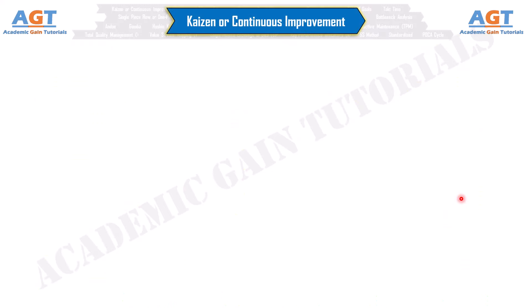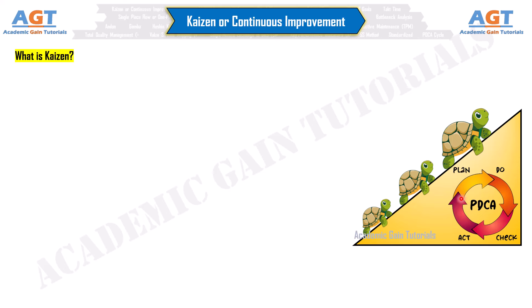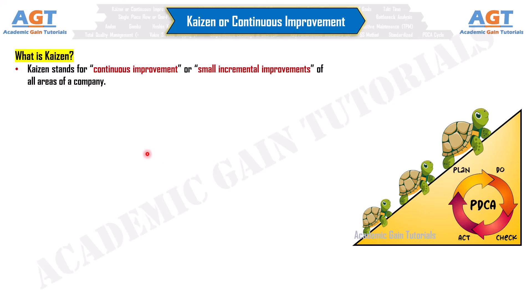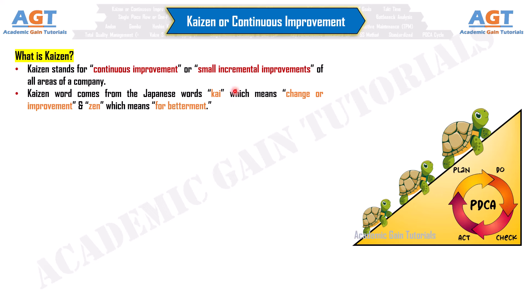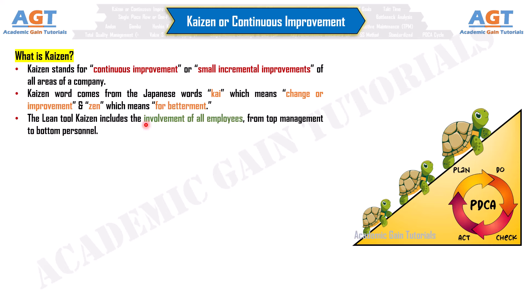Number 1: Kaizen, or Continuous Improvement. Kaizen stands for continuous improvement or small incremental improvements of all areas of a company. The word Kaizen comes from the Japanese words 'kai', which means change or improvement, and 'zen', which means for betterment. The lean tool Kaizen includes the involvement of all employees, from top management to bottom personnel.